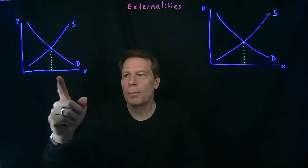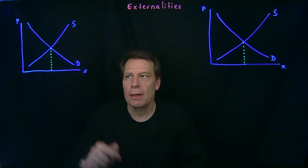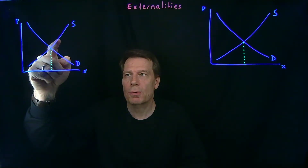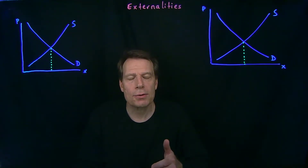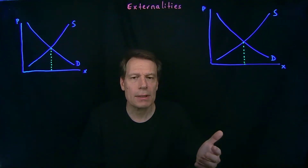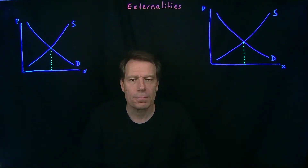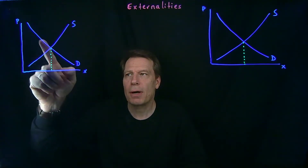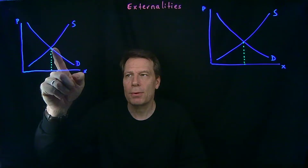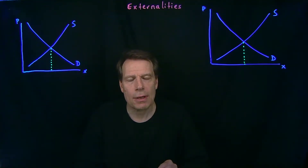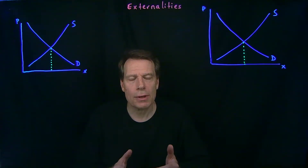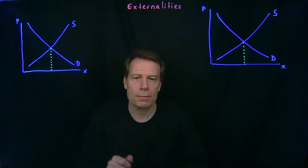If we were to produce beyond that intersection, the marginal cost would lie above the marginal benefit, and the additional surplus we would incur would be negative. So we maximize that positive area by producing at that intersection. And of course markets are guided to that intersection through market prices that coordinate the behavior of households and firms.